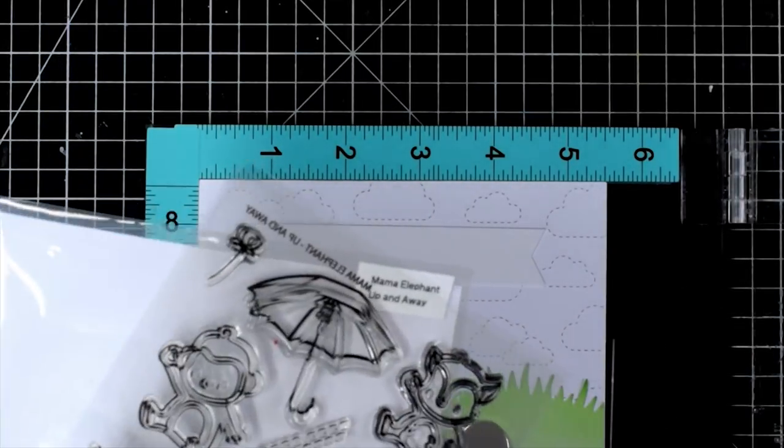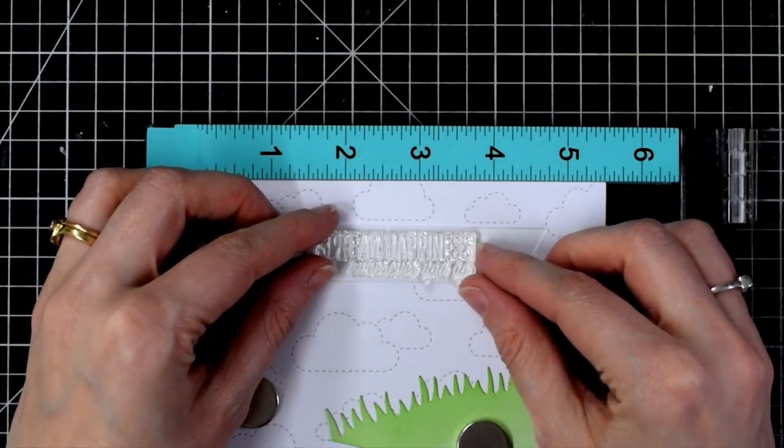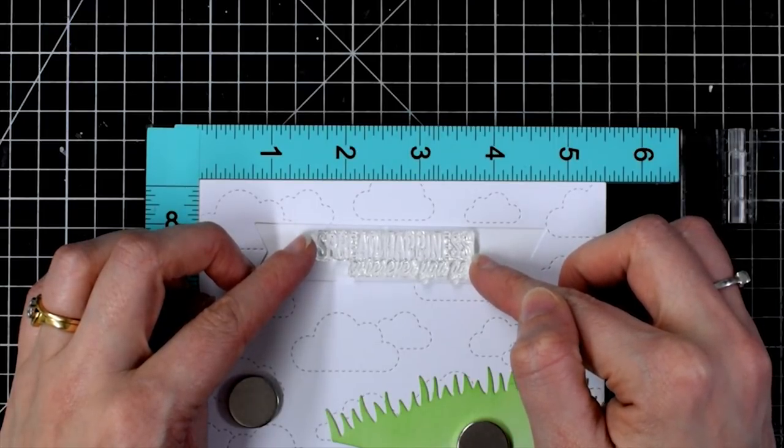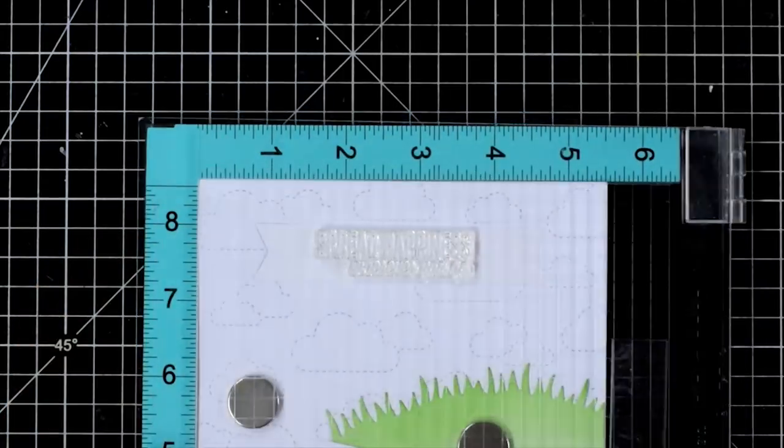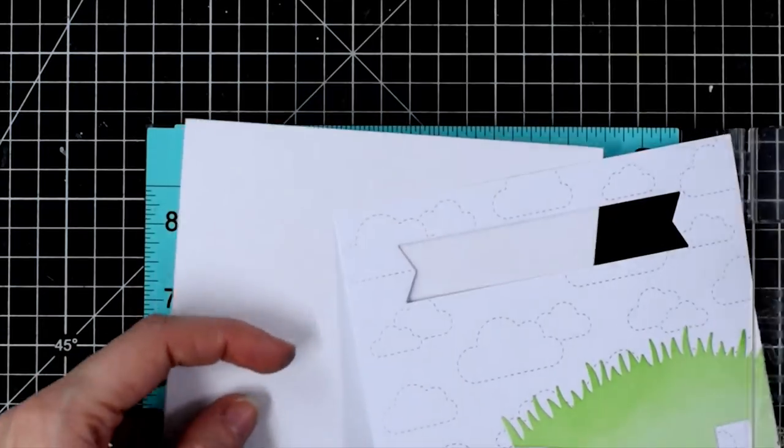I'm using a sentiment from Mama Elephant's Up and Away stamp set and because I'm putting this in my MISTI, I can line it up exactly in the middle of that little banner aperture, pick up the stamp with the lid of my MISTI.